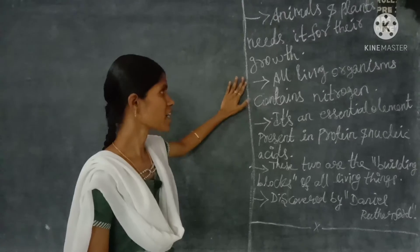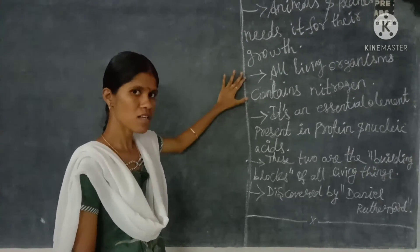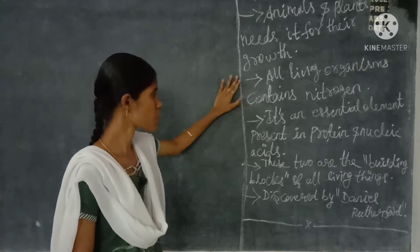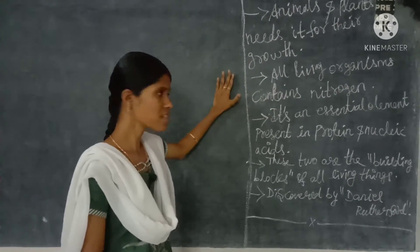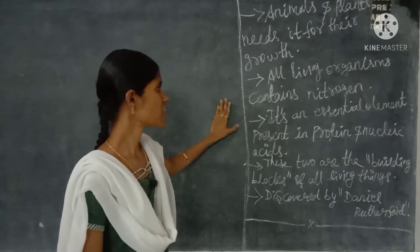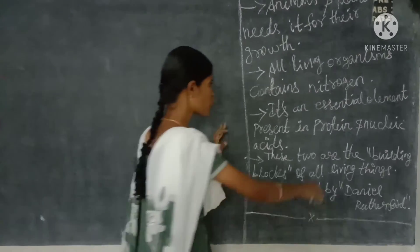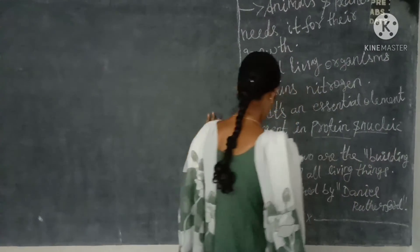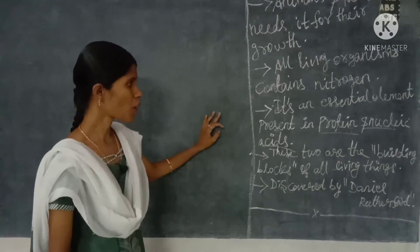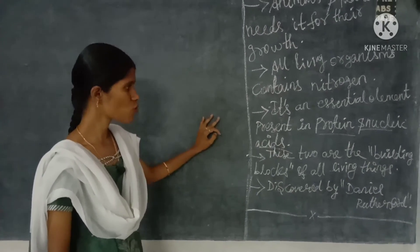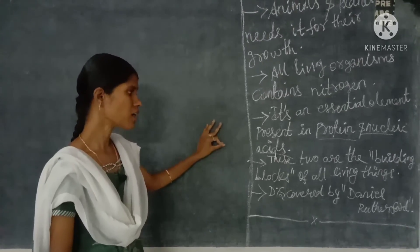Animals and plants need nitrogen for their growth. All living organisms, including us, contain nitrogen. Nitrogen is an essential element present in protein and nucleic acid.